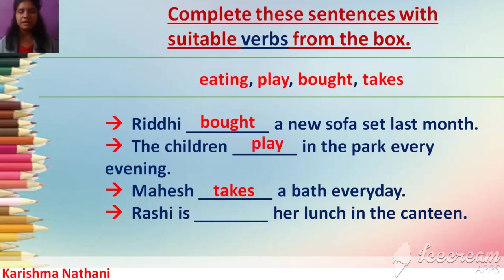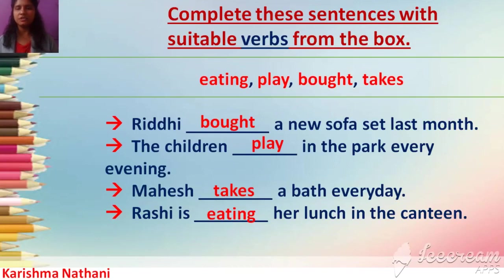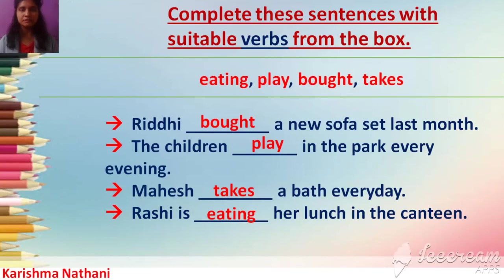'Rashi is ___ her lunch in the canteen.' Answer: 'Rashi is eating her lunch in the canteen.' 'Eating' is the -ing form of the verb 'eat', so it shows present continuous tense because it comes with 'is'.